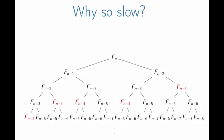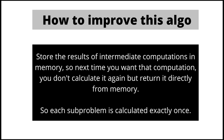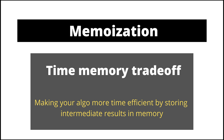Now we know the reason this algorithm is slow — it needs improvement. Since the same computations are repeated again and again, what we can do is store the values of these computations somewhere. When the algorithm needs that value again, we just retrieve it from memory. For example, when calculating F(n-3) for the first time, we store it; the next time F(n-3) is needed, we fetch it from memory instead of recalculating. This technique of storing intermediate results in memory and saving time is the time-memory trade-off, and it is called memoization.